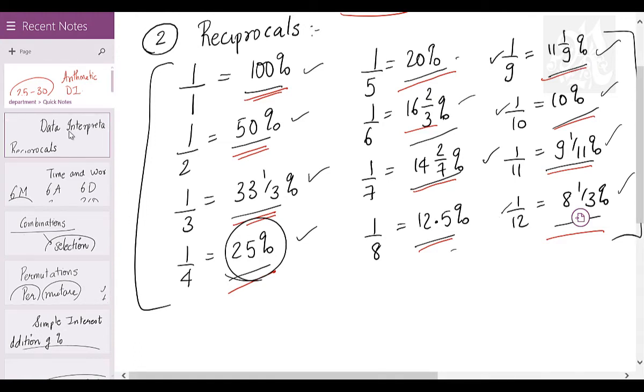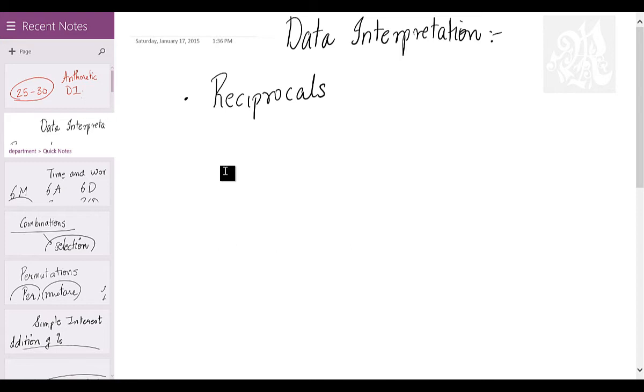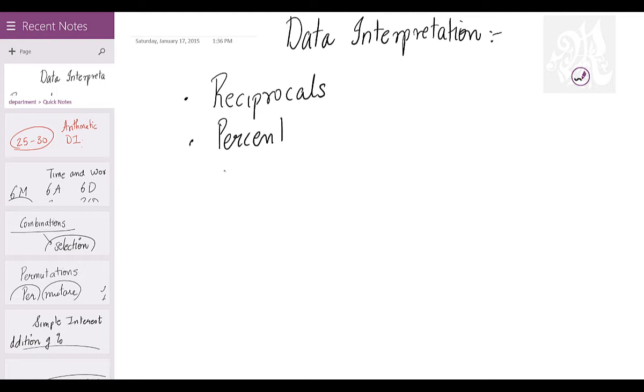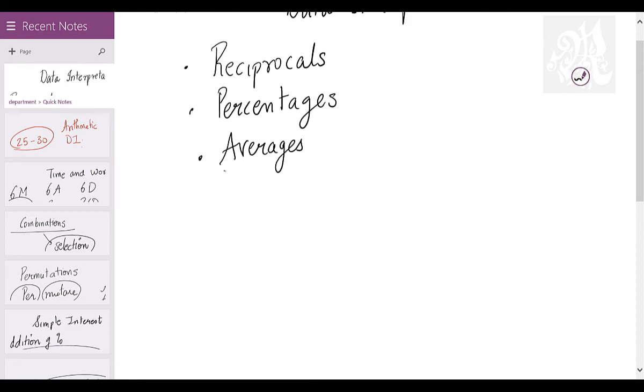After you know these reciprocals, we can talk about percentages. Three things that you should know in DI are reciprocals, percentages, and averages. We have spoken about averages and percentages already, but I'll give you a different perspective about these things now. Let's talk about percentages to start with. Reciprocals are fine, just refer back to that page. 1/1 to 1/12 should be enough for starters, for an exam like what you're writing.